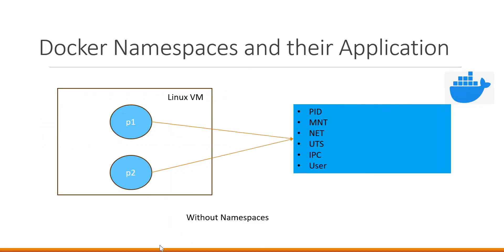For example, if we don't use namespaces, when we create multiple processes like p1, p2, and so on, each process will see the same process IDs, mount points, network interfaces, the Unix timesharing system which provides domain names and hostnames, inter-process communication, and users and groups. The processes p1 and p2 will view the same information. The problem is every process will know the information about other processes, which creates security vulnerabilities.